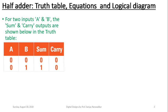Next combination: A is 1, B is 0 — 1 plus 0, sum is 1 and carry is 0. And the last combination at the bottom of the truth table is 1, 1 — 1 plus 1, sum is equal to 0 and carry output is 1. This is how the truth table is developed for the half adder using binary addition rules, which we have already covered.